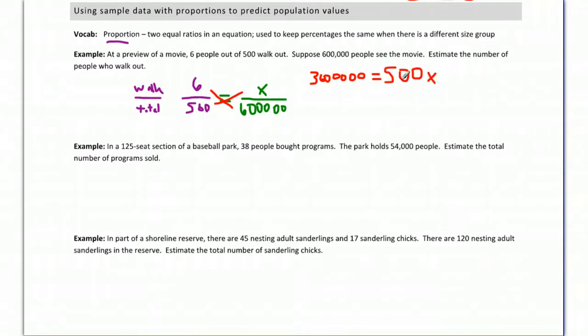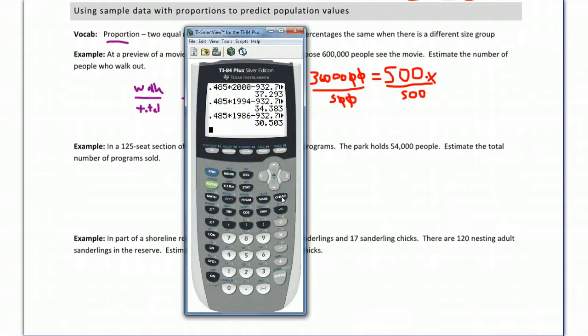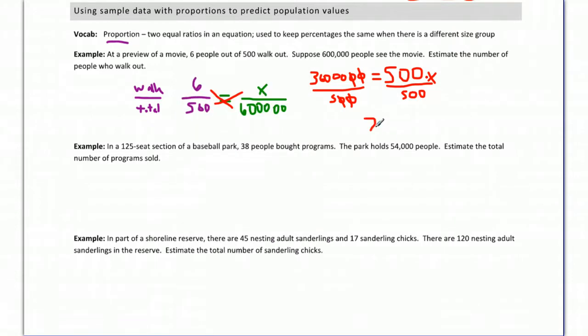And whenever we want to get x by itself and it's being multiplied by something, we divide. So divide this side by 500, divide this side by 500. If you want to simplify some of this in your head, you can cancel out some of the zeros at the end. Divide both top and bottom by 100. And we have 36,000 divided by 5. We can throw that into our calculator. 36,000 divided by 5, and that's going to be 7,200. So 7,200 is x and 7,200 people walk out.